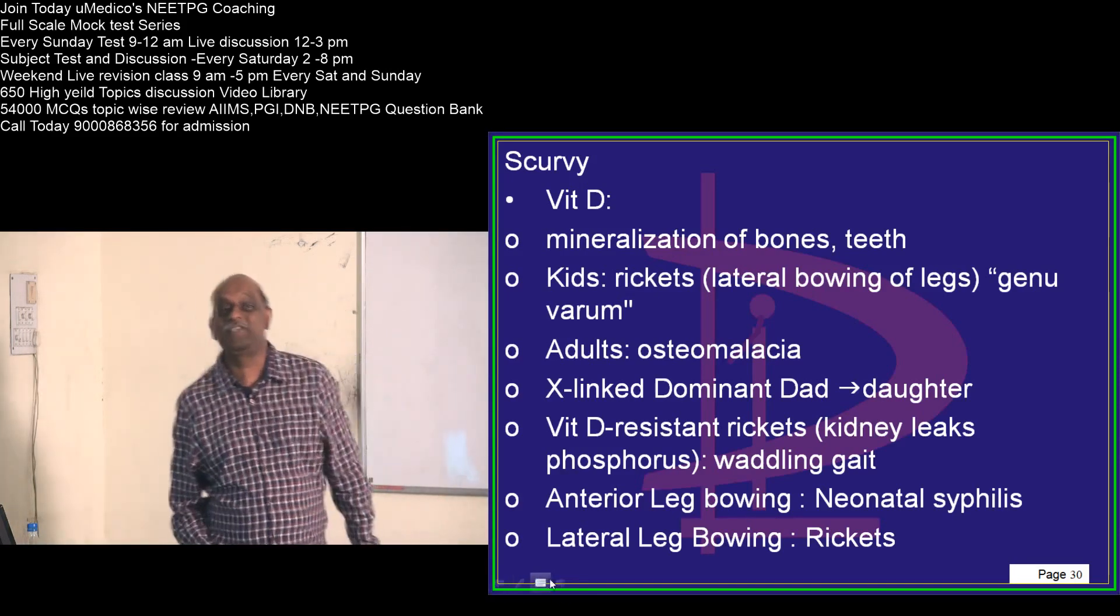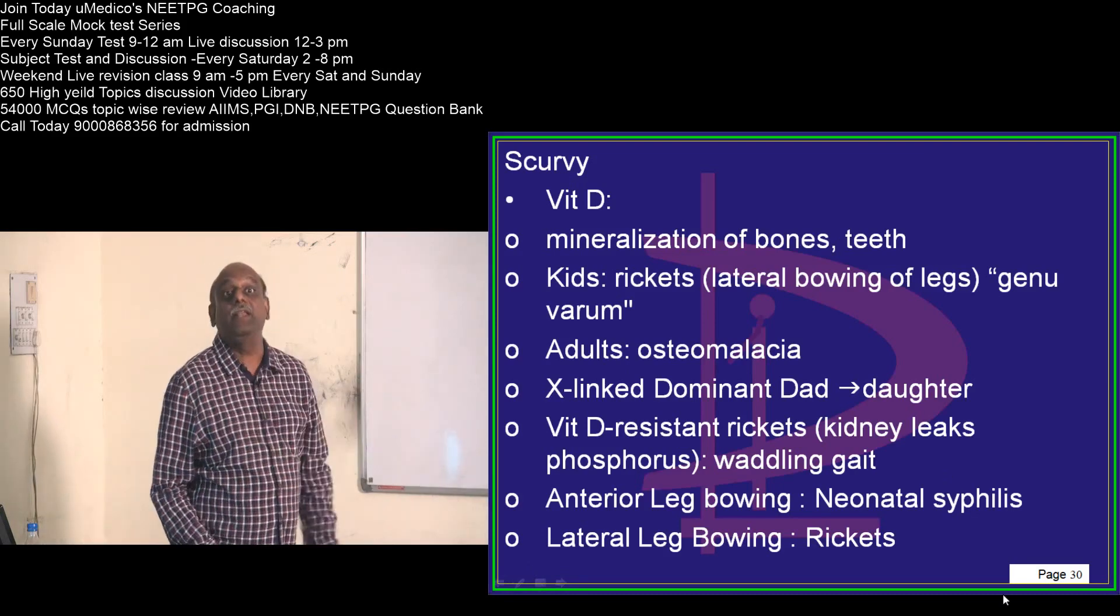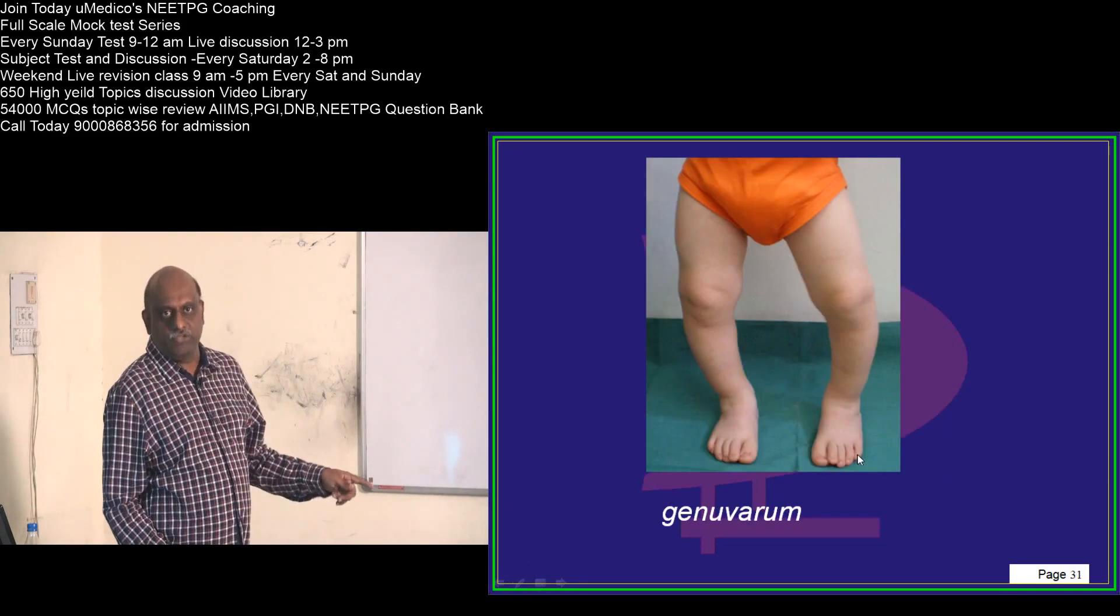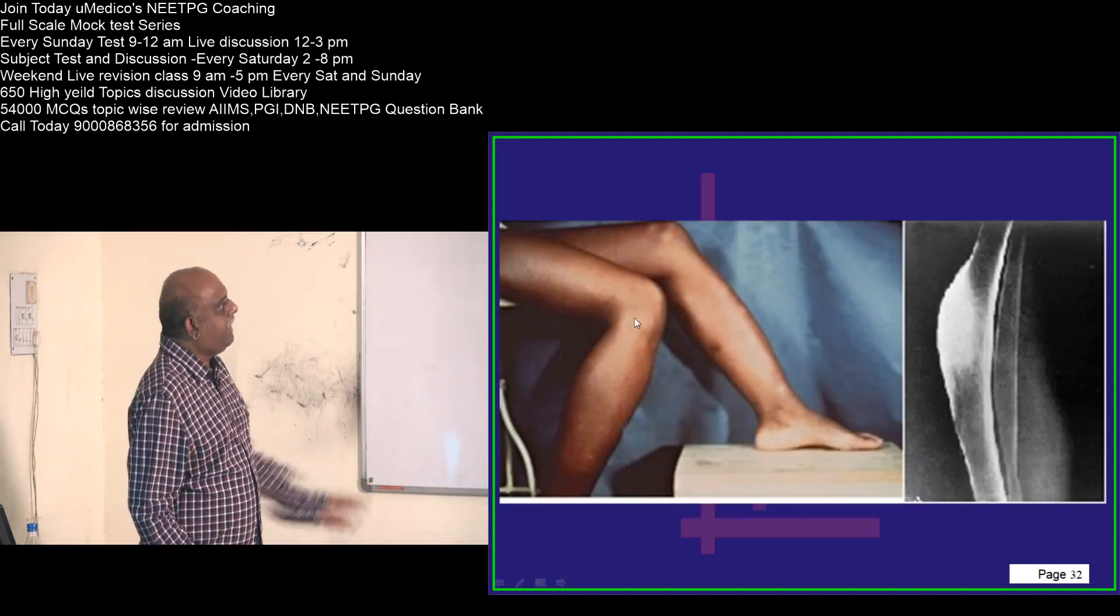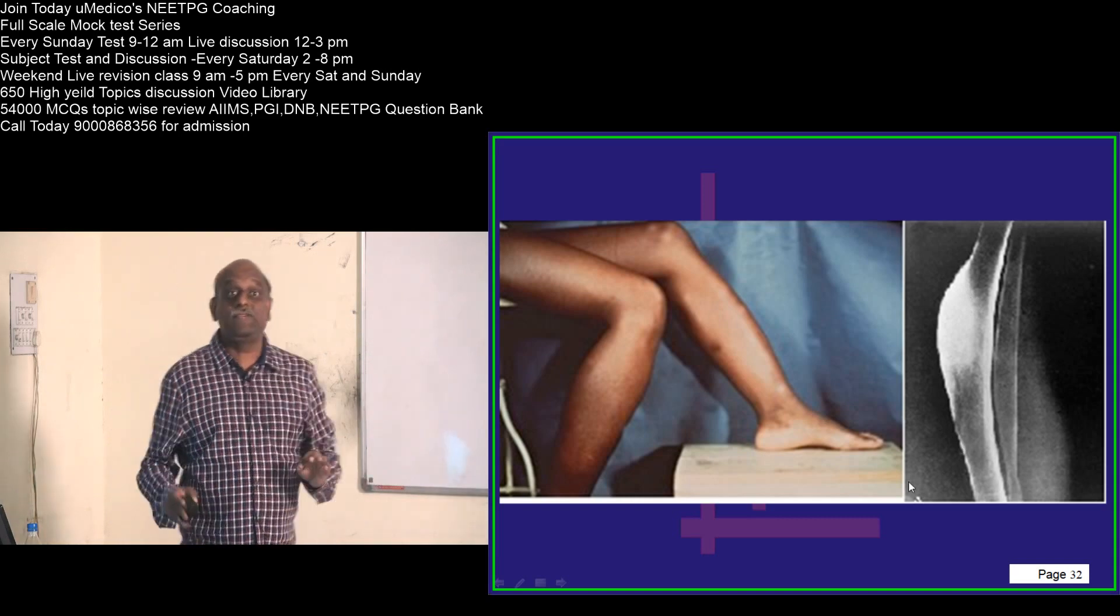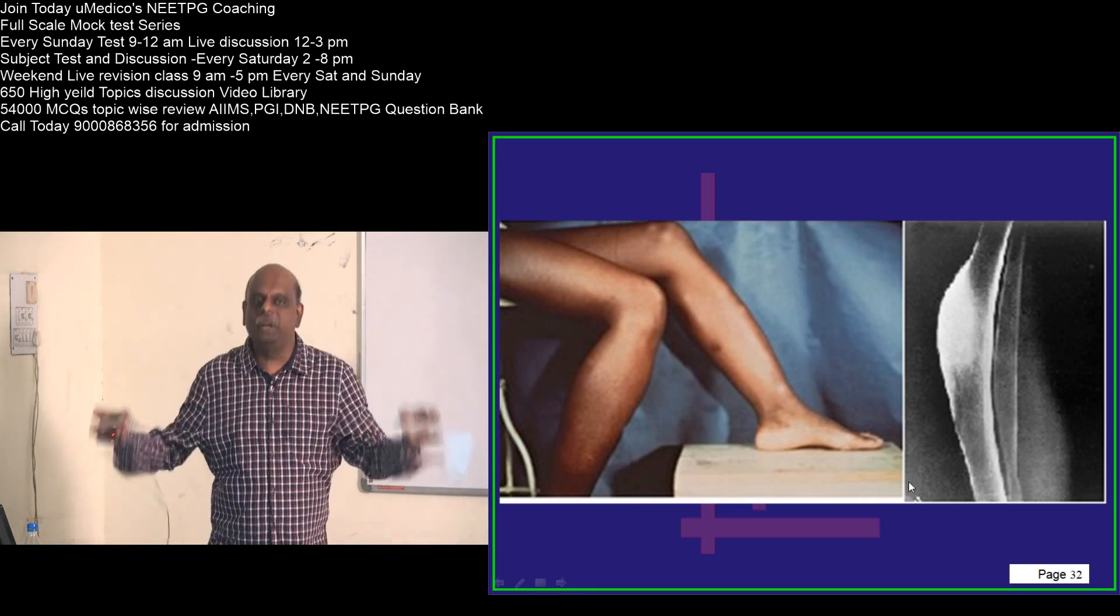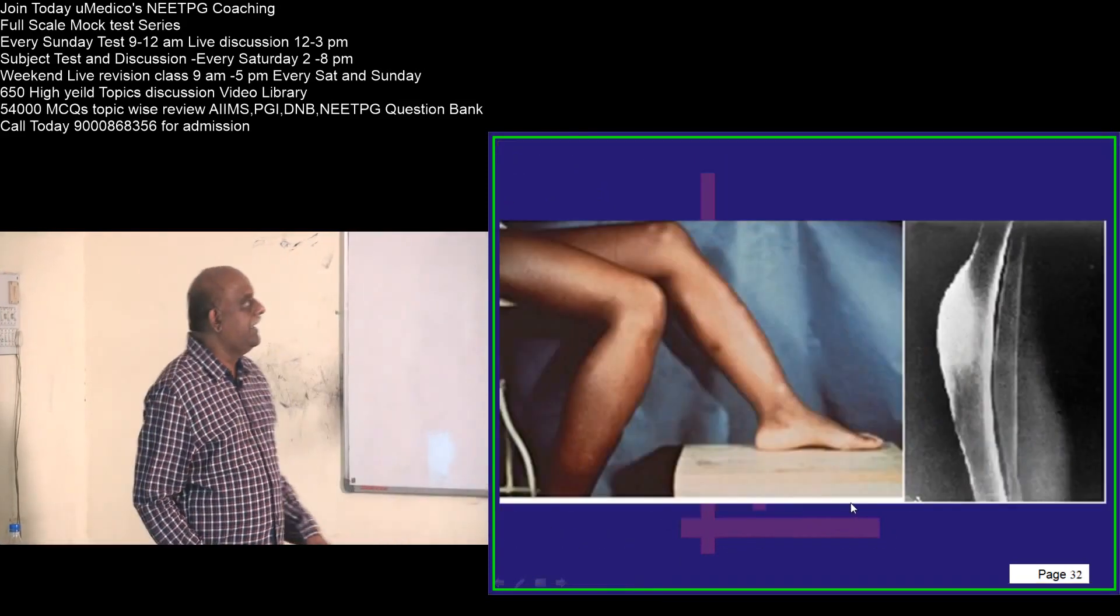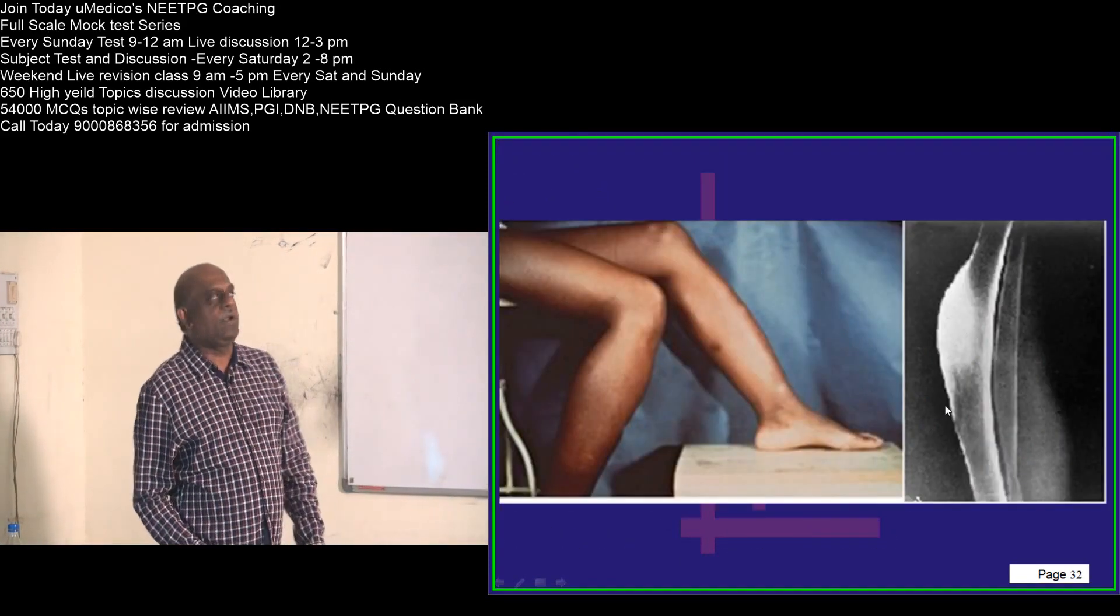Lot of students do this mistake. That is typically seen in neonatal syphilis. So this is lateral bowing which is called genu varum, whereas this is anterior bowing which is called as the saber shin, is what you need to remember, which is typically seen in neonatal congenital syphilis, is what I want to underscore to all of you.